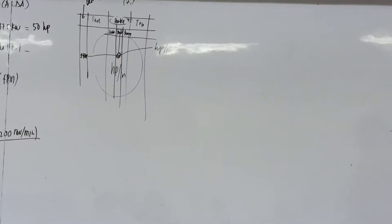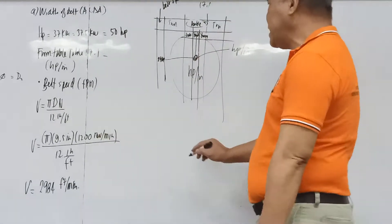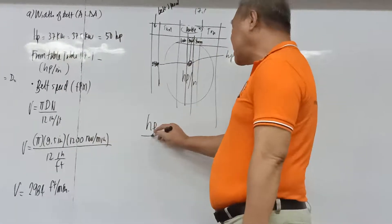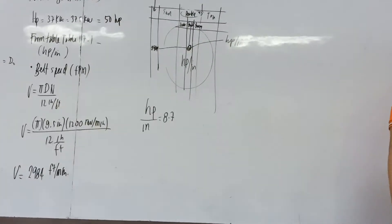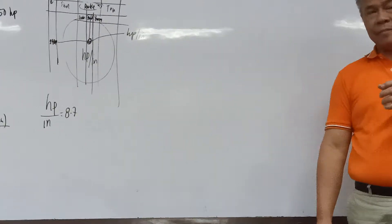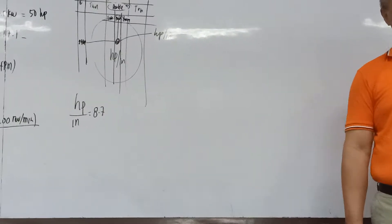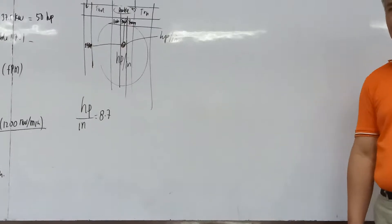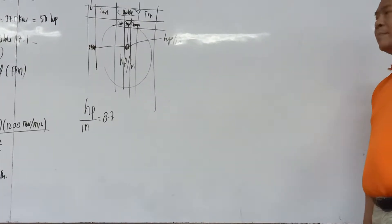Now for C_P, which represents the pulley size correction factor. We use the smaller driving pulley, which is 9.5 inches. Going to Table 17.2, for pulley sizes 9 to 12 inches, the corresponding C_P value is 0.7.